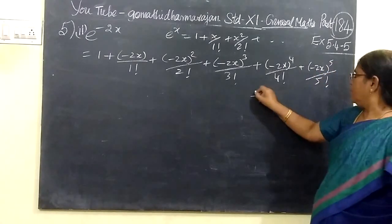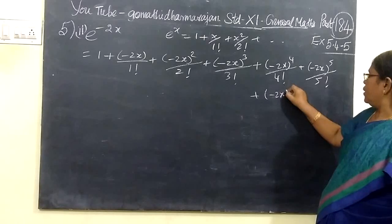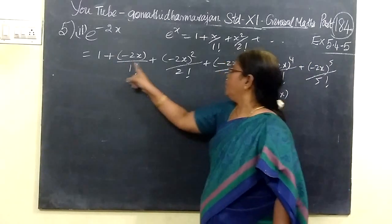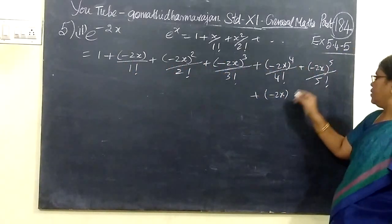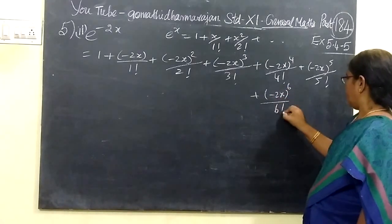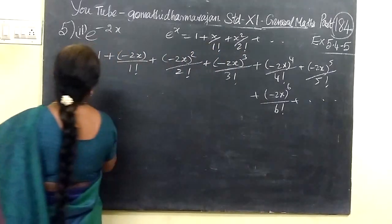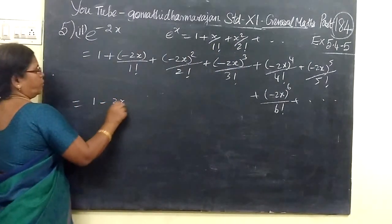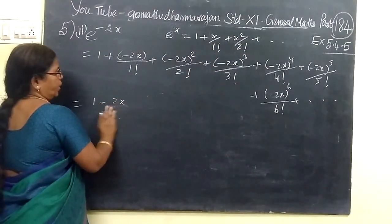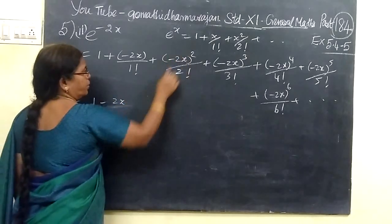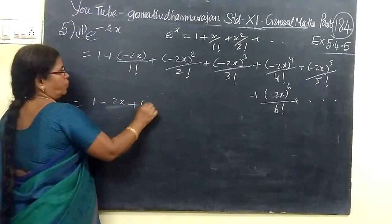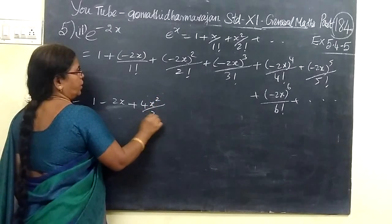Then minus 2x whole cubed by factorial 3. Then minus 2x whole to the fourth by factorial 4. Then factorial 5, minus 2x to the fifth. So, here we have by factorial 3.